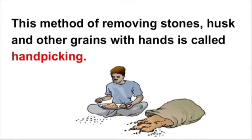Hand picking is a method of separation. Now look at this picture — the man is picking the stones with his hands and throwing them away. This method is called the hand picking method. You can also remove the stones from rice and pulses by using this method.